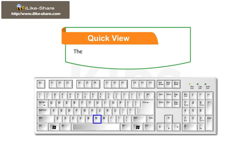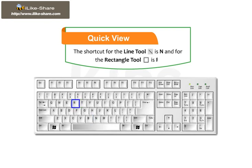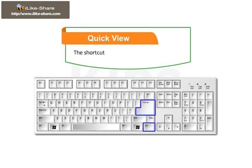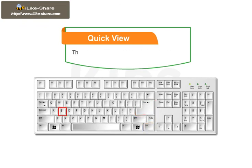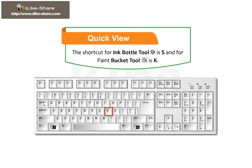The shortcut for the Line Tool is N and for the Rectangle Tool is R. The shortcut key to preview the animation is Ctrl + Enter. The shortcut for the Ink Bottle Tool is S and for the Paint Bucket Tool is K.